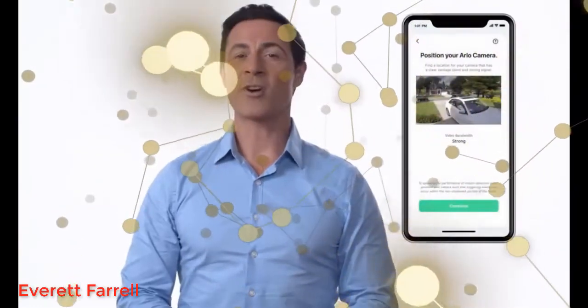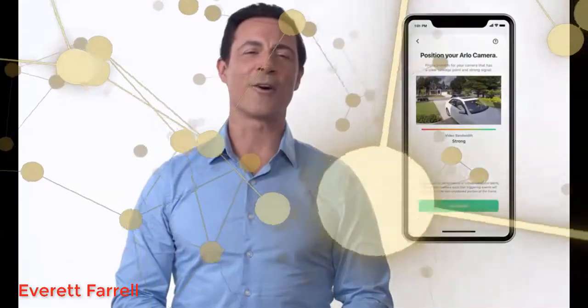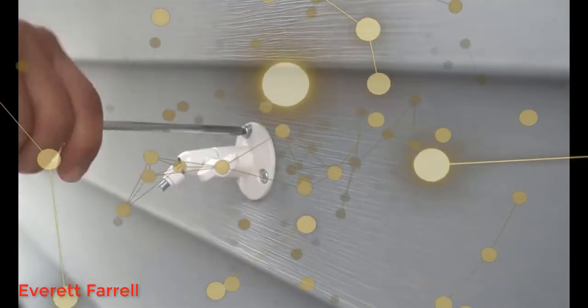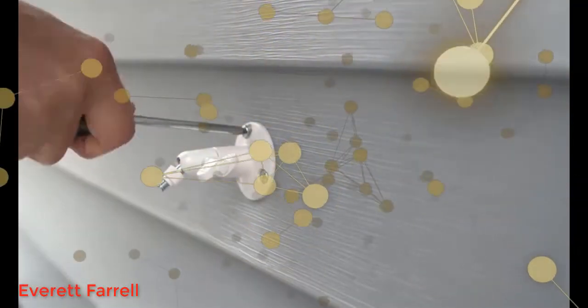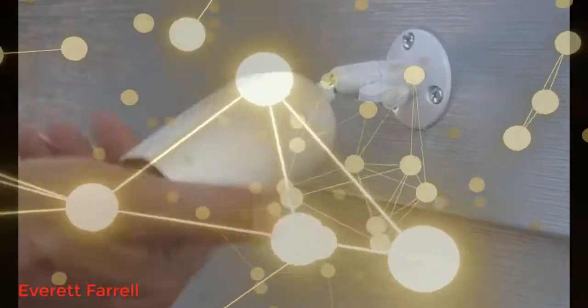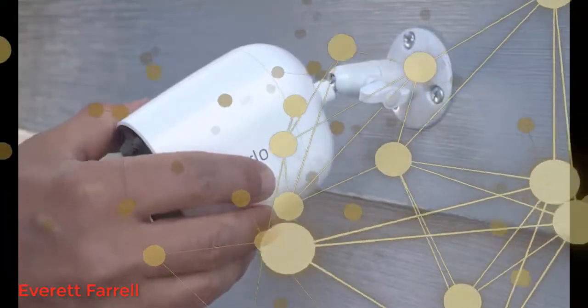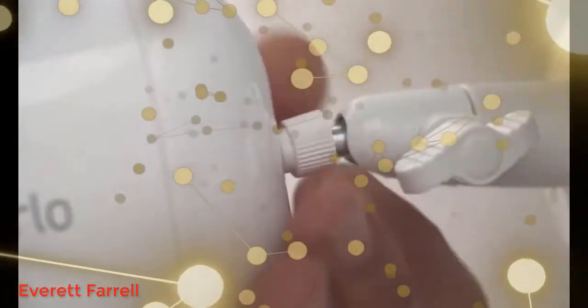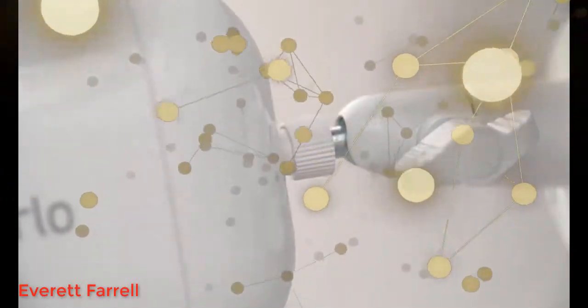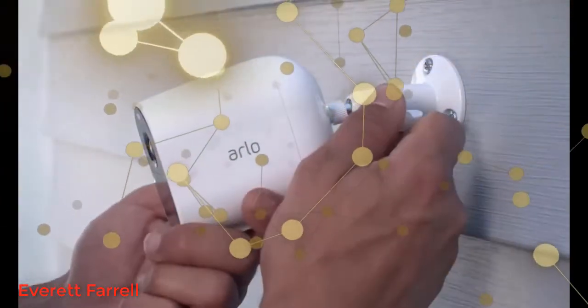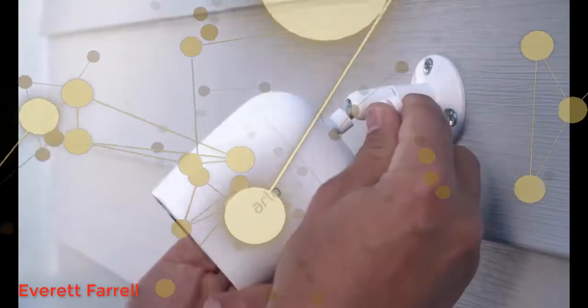Check the signal strength here. A strong signal is indicated with the color bar reaching green on the far right. After you found the ideal location, you'll want to install the mount. Next, attach your camera to the mount. Tighten the back of the mount to ensure a tight fit.